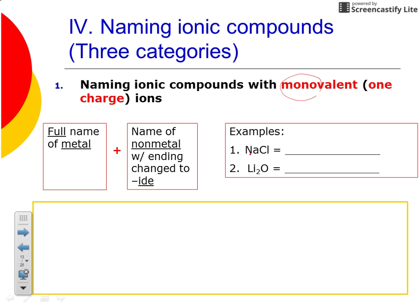Let's look at a couple of examples. Here we have sodium — he's in group 1A, so he's monovalent. So you name your first element sodium, and then chlorine changes to chloride, so C-H-L-O-R-I-D-E. Sodium chloride, otherwise known as table salt.